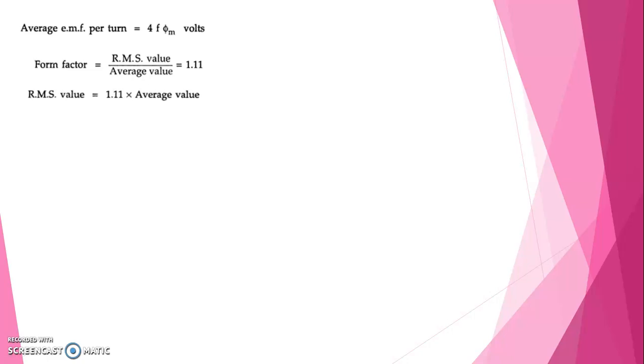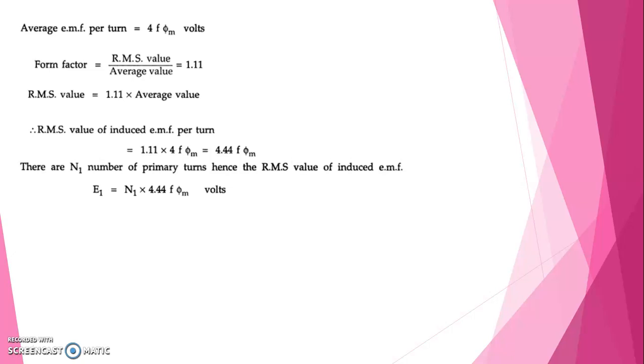All you know well that form factor is the ratio between RMS value to the average value which is equal to 1.11. To get the value of RMS we have to multiply 1.11 with the average value. So RMS value of induced EMF per turn 1.11 into 4f phi m which is equal to 4.44f phi m. There are N1 number of primary turns, hence the RMS value of induced EMF E1 is equal to N1 into 4.44f phi m volts.